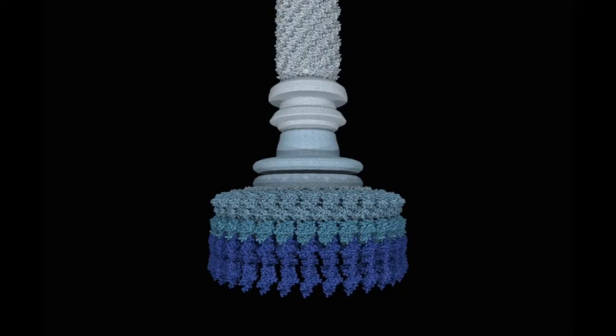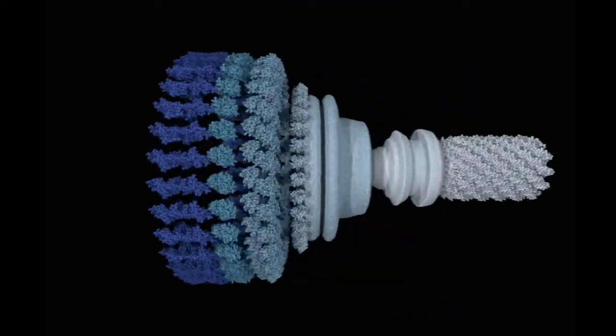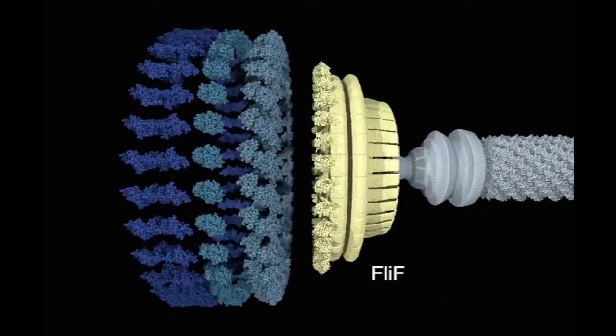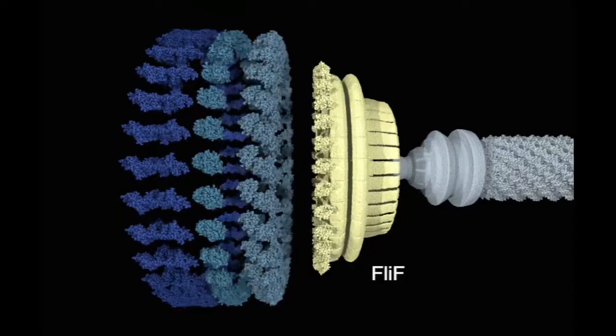The rotor of this motor is comprised of multiple rings. The first to assemble is termed the FliF ring, which acts as a scaffold.